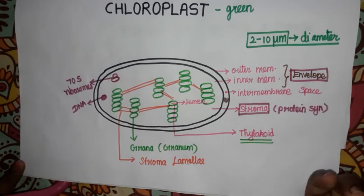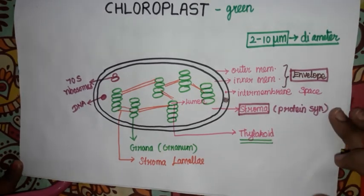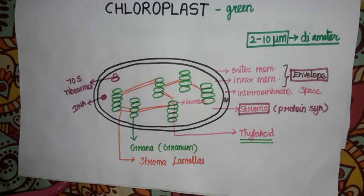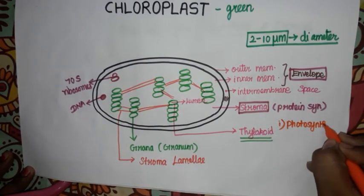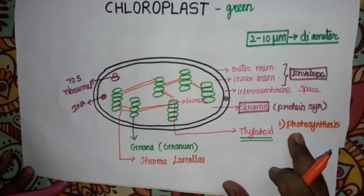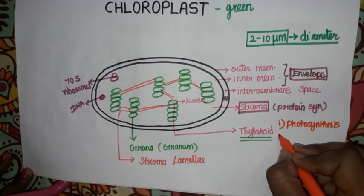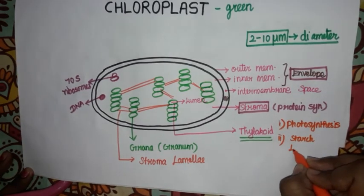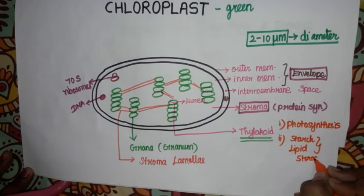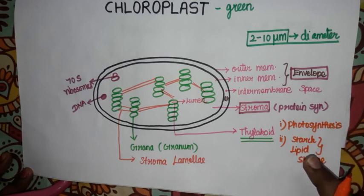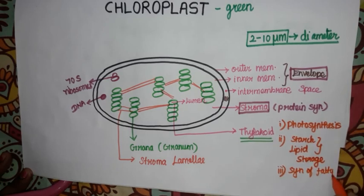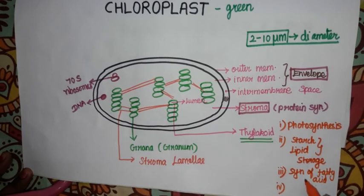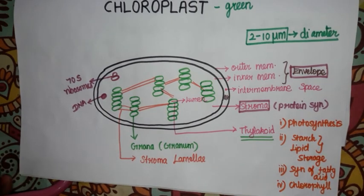So the functions of plastids are synthesis and storage. The first function is photosynthesis, which is very important. The second function is storage of starch and lipid. Additionally, there is synthesis of fatty acids and synthesis of chlorophyll pigment, which is a very important pigment for photosynthesis.